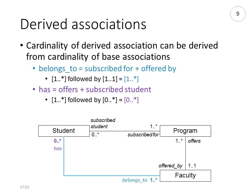In the other direction — navigating from faculty to student — a faculty can offer at least one program and a program can but need not have a subscribed student, so in the worst case a faculty may have zero students. For the maximum, a faculty offers possibly many programs and each program possibly has many students, so a faculty possibly has many students.